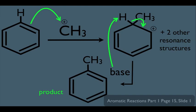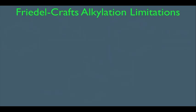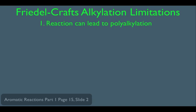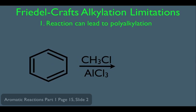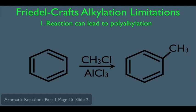With this reaction comes limitations we need to know for the next orgo exam — professors tend to test you on the limitations of Friedel-Crafts alkylation. The first limitation, number one, is that this reaction can lead to polyalkylation. When you perform Friedel-Crafts alkylation, you can get a monoalkylated product, but the reaction can keep going and keep adding more methyl groups to the benzene ring. To get around this problem in the lab, benzene is added in excess, which avoids polyalkylation.